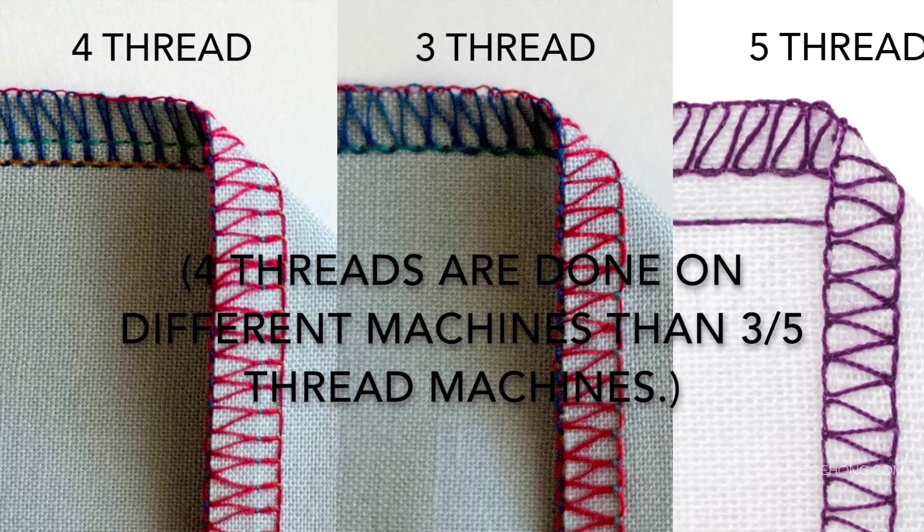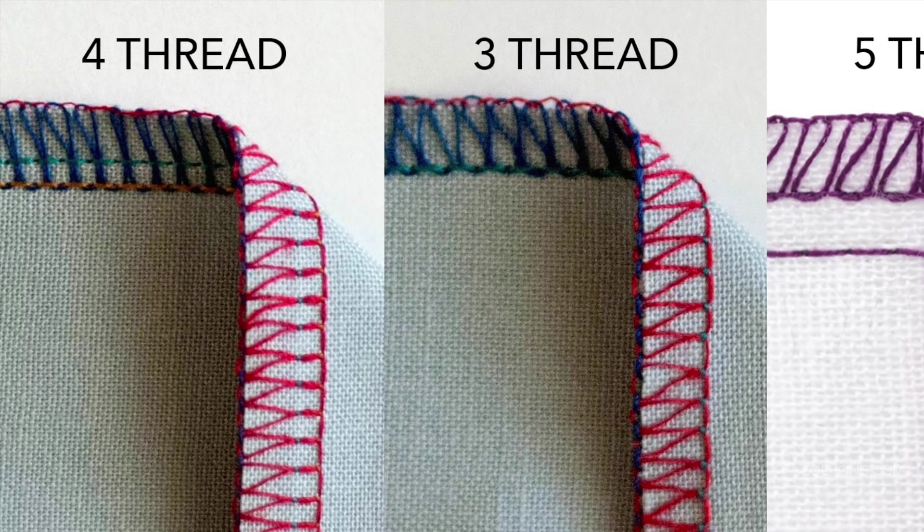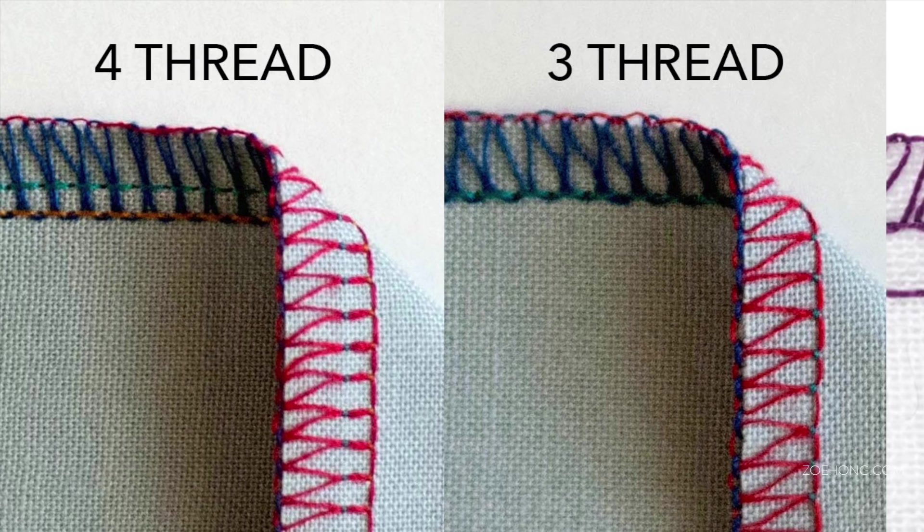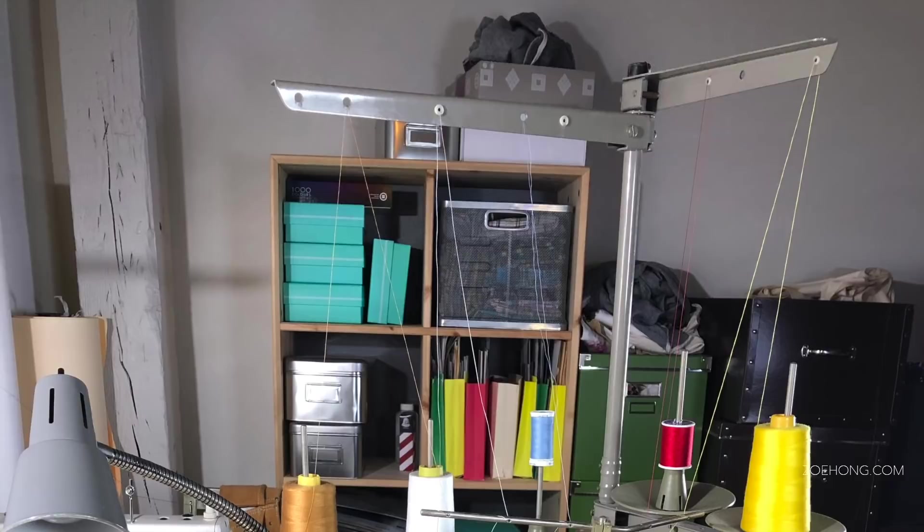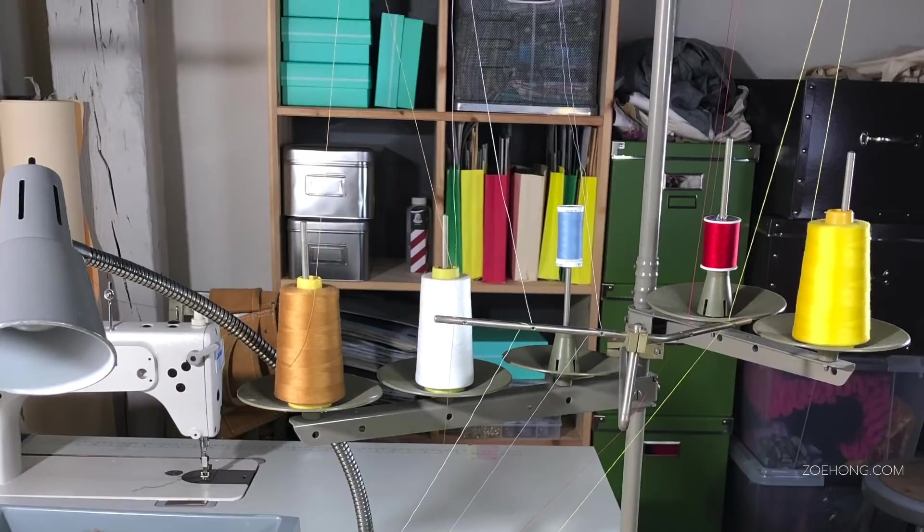If the whole seam is done with just the wrapping overlock, four thread is the sturdier better choice. If you're using overlock only to finish the edge of the fabric, three thread wrapping is fine. Some people will use a regular single needle lock stitch machine to do the initial seam and then finish with an overlock.